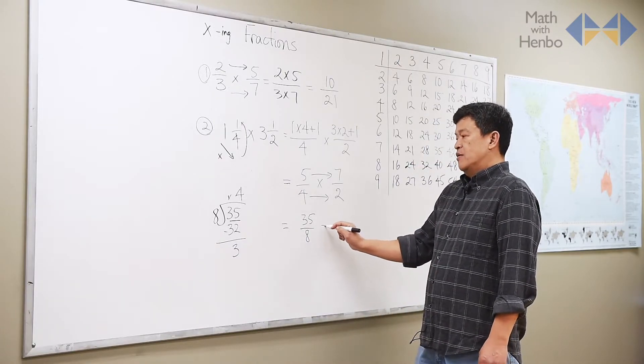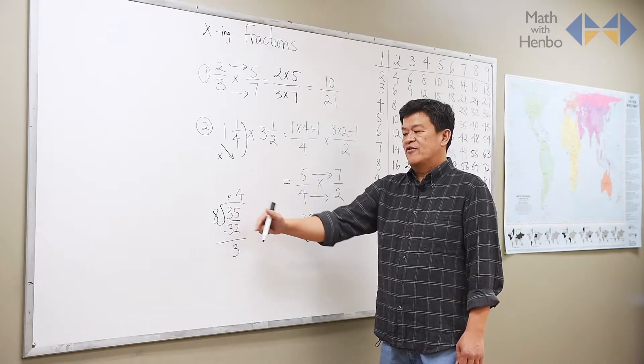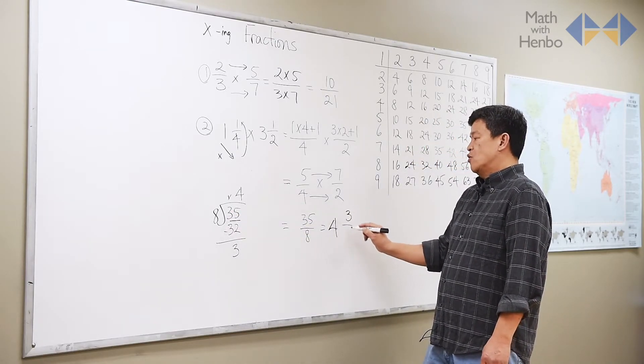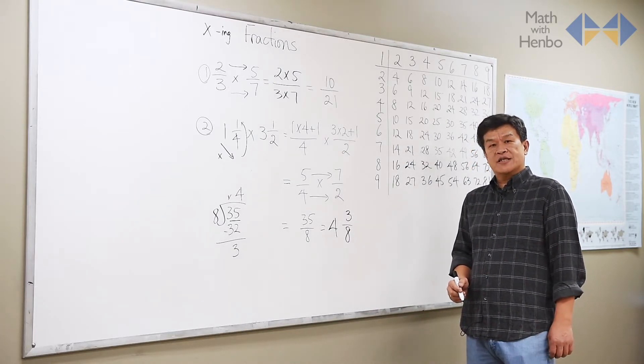So, here, the final answer then is, sorry, 35 divided 8 gives us 4. And the remainder goes on top as 3, and the bottom number never changed. So, the answer is 4 and 3 eighths.